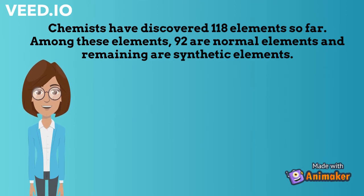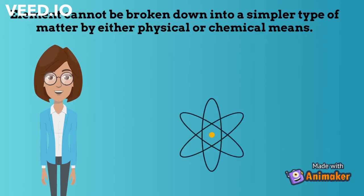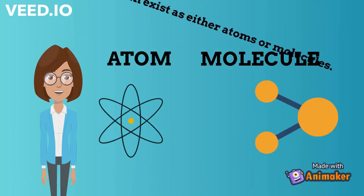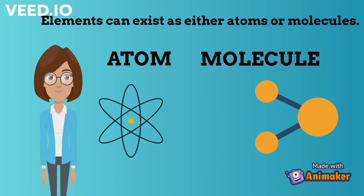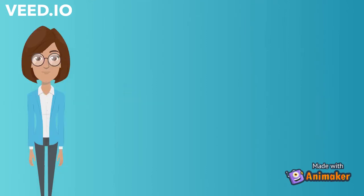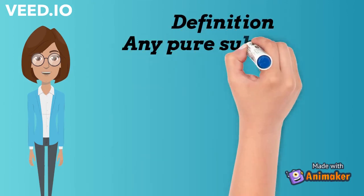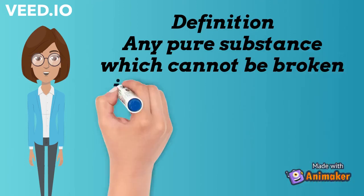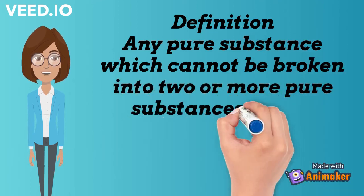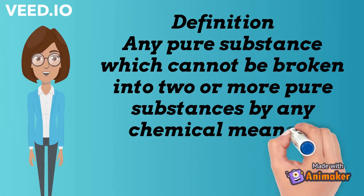Chemists have discovered 118 elements so far. Among these elements, 92 are natural elements and the remaining are synthetic elements. An element cannot be broken down into a simpler type of matter by either physical or chemical means. Elements can exist as either atoms or molecules. Definition: Any pure substance which cannot be broken into two or more pure substances by any chemical means is called an element.